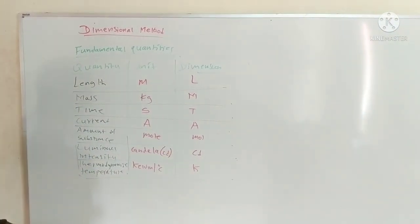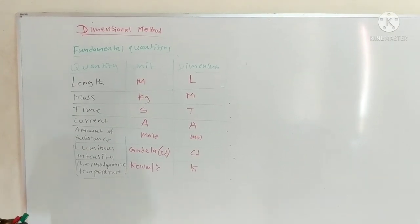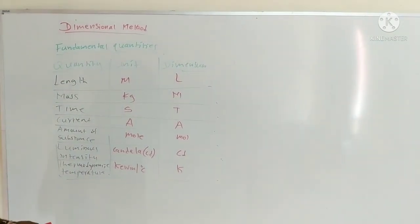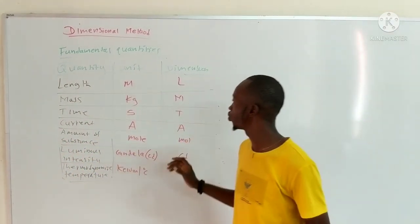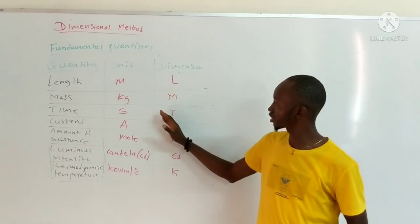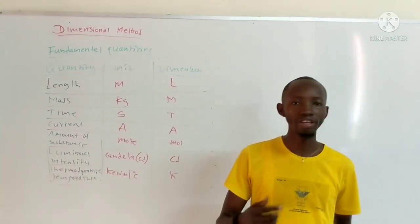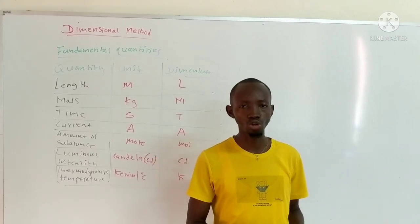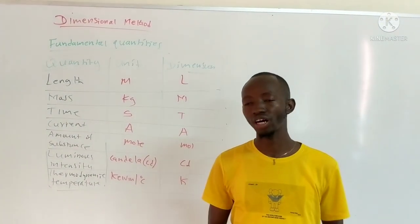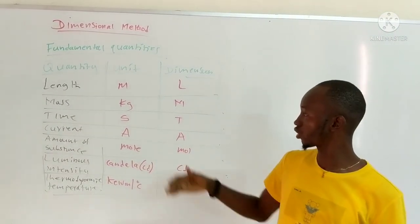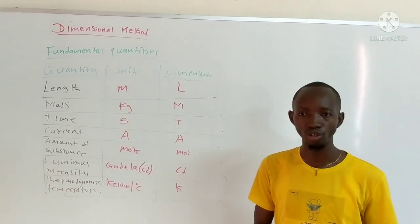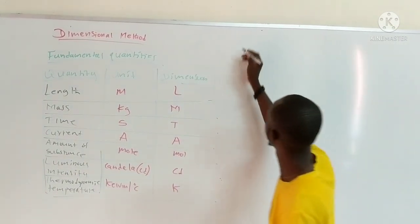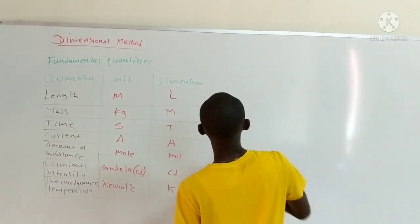So these are the basic fundamental quantities. Now, how can we use dimension to find the unit of quantities? One of the uses of dimensional analysis is we use it to find the unit of a quantity. The second point: we use dimension to show how a quantity is related to another quantity. We also use dimension to show the correctness of an equation, or to show the validity — whether an equation is correct or not. Our third point here is how we can use dimension to find the unit of quantities.